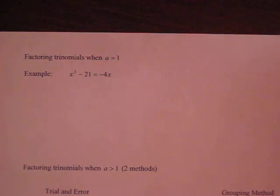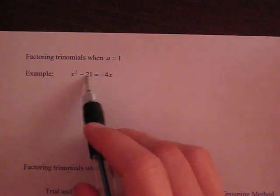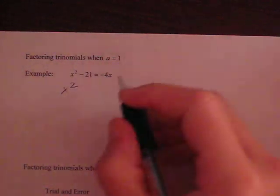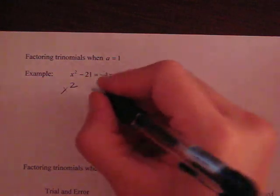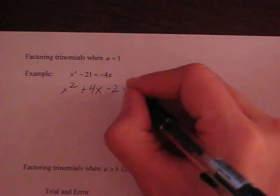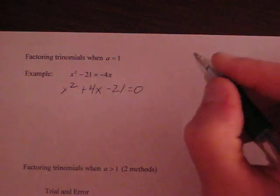When you factor a trinomial, which means there are three terms, you have to have everything set equal to zero. So I'm going to have to move this 4x over. So I have x squared plus 4x, because of inverse operations, minus 21 equals zero.